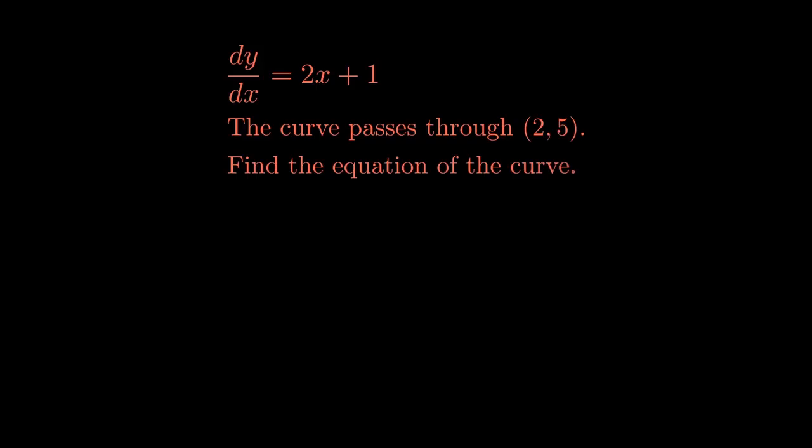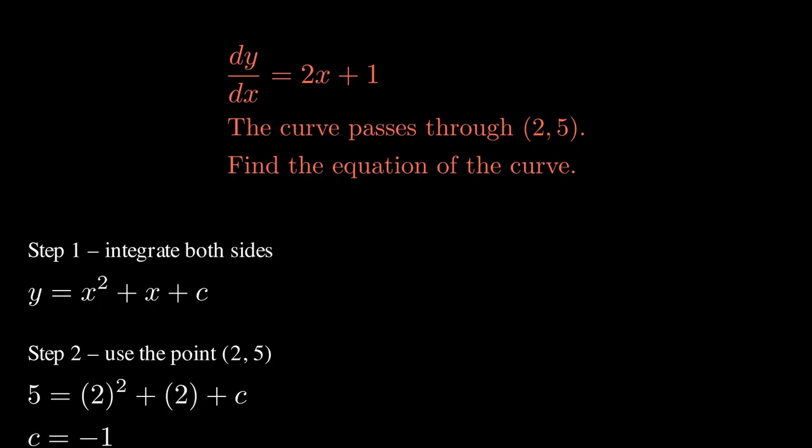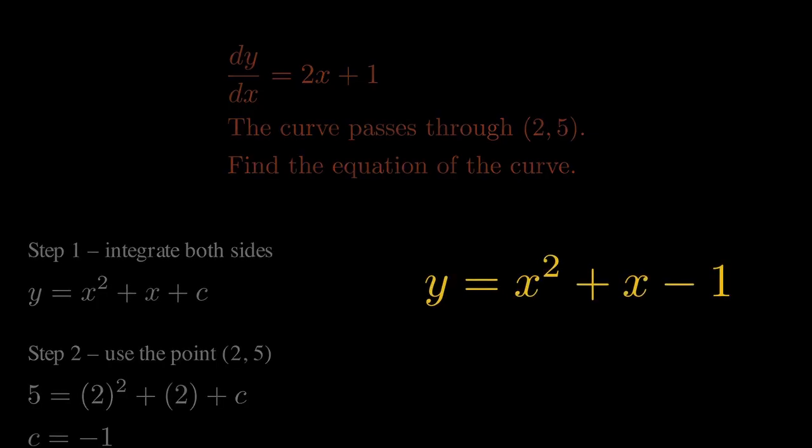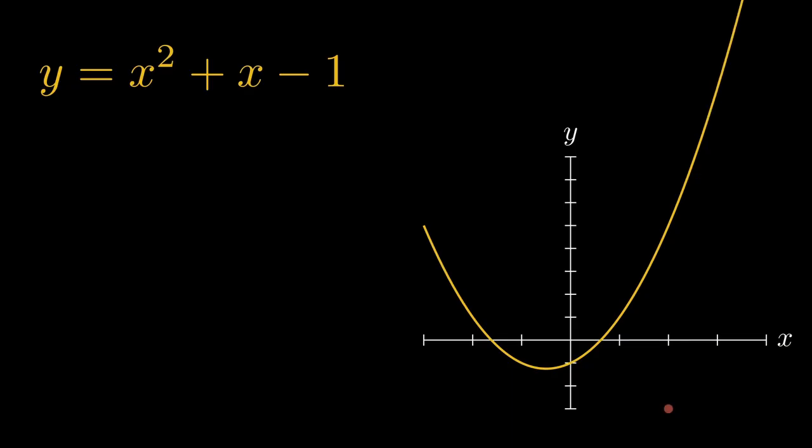For example, let's say we're given the question dy by dx is equal to 2x plus 1, and we're told that the curve passes through 2, 5. And it therefore says to find the equation of this curve. So if we give this a crack here, step 1, first thing we need to do is integrate this function. So when we do that, we get y is equal to x squared plus x plus c. But now there's a problem. We have the plus c, so what do we do? Well, we're going to use the given point 2, 5 to find c. So let's plug in x equals 2, y equals 5. And we therefore get 5 is equal to 2 squared plus 2 plus c, which means that c is going to equal negative 1. Therefore, we can say that y is equal to x squared plus x minus 1.